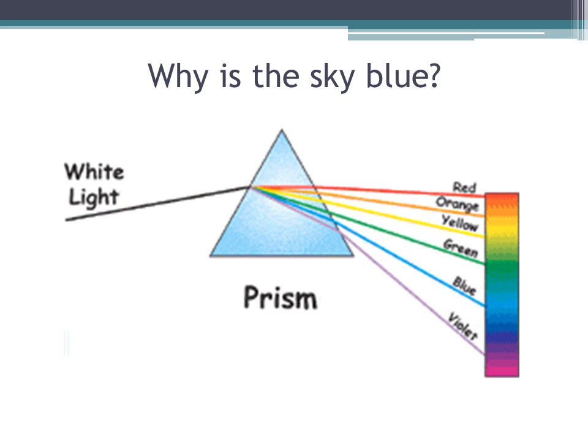As you can see here, white light, when you put it through a prism, you can see all the different colors that really make up that white light. We have red, orange, yellow, green, blue, and violet.